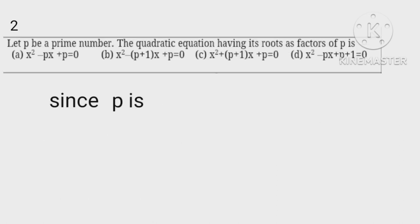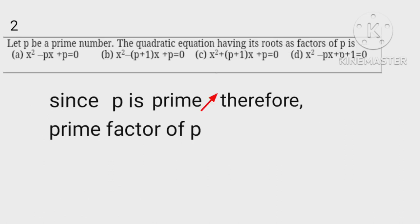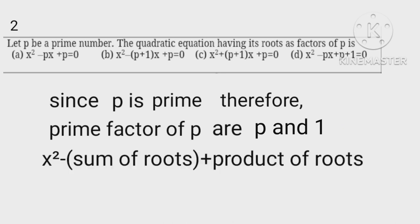Since p is prime, therefore prime factors of p are p and 1. Therefore the quadratic equation having p and 1 as factors is x squared minus sum of roots plus product of root, which means x squared minus p plus 1 times x plus p.